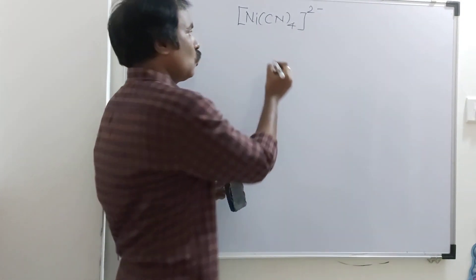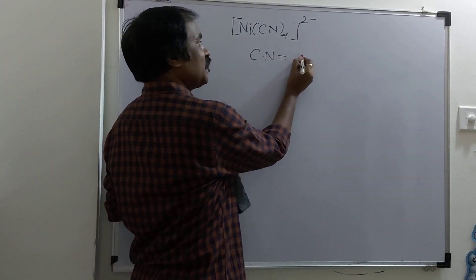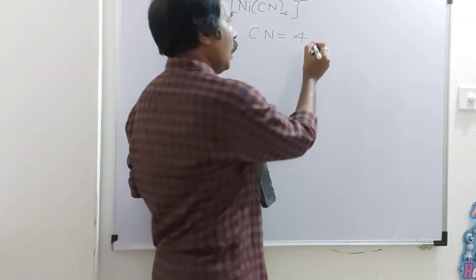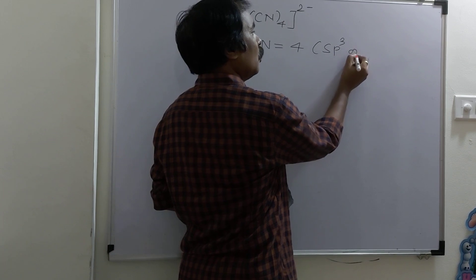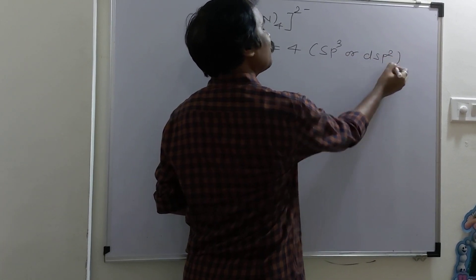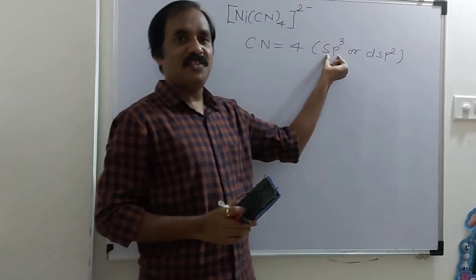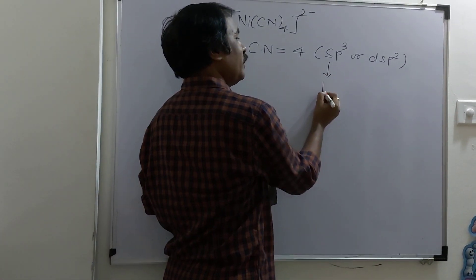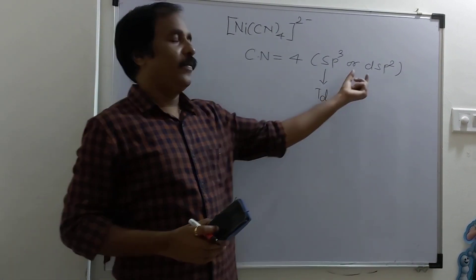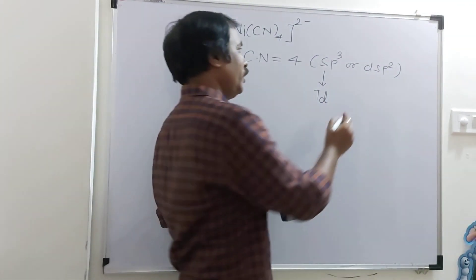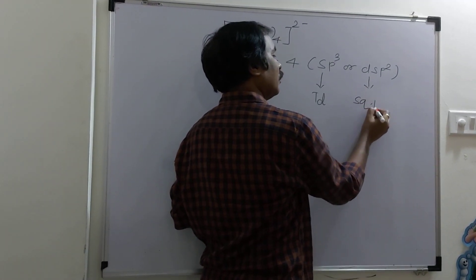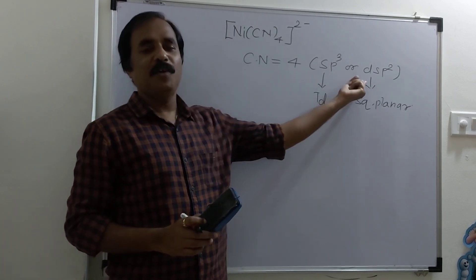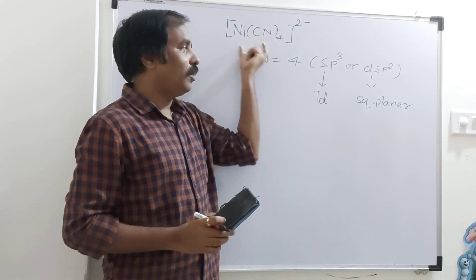We know that when the coordination number of any metal or metal ion is 4, then what type of hybridization is present in this complex? Either sp³ or dsp². Remember: when hybridization is sp³, the geometry is tetrahedral. When hybridization is dsp², the geometry is square planar. So this is an example of dsp², and the geometry of this complex is square planar.